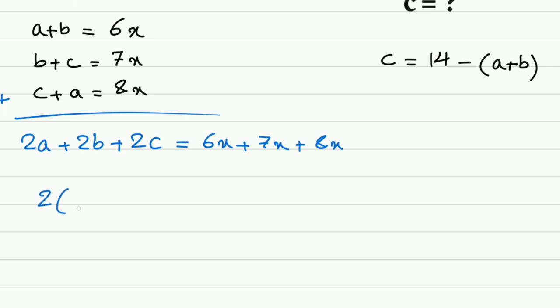Let's factor 2. We have a plus b plus c, and on the right side we have 6, 7, 8. We factor x. Now a plus b plus c equals 21 over 2 times x.